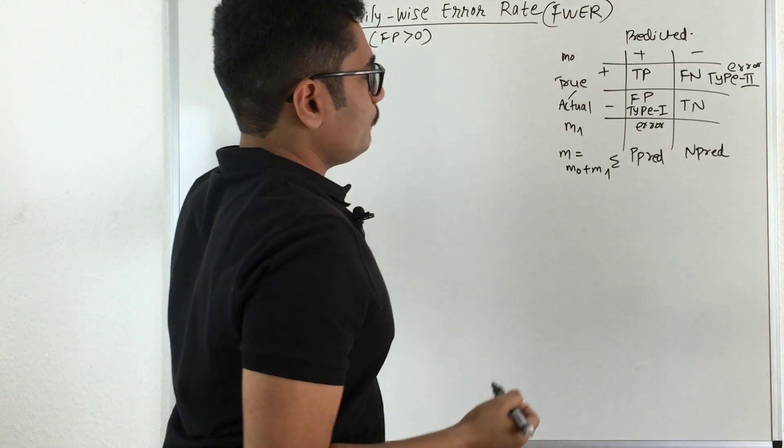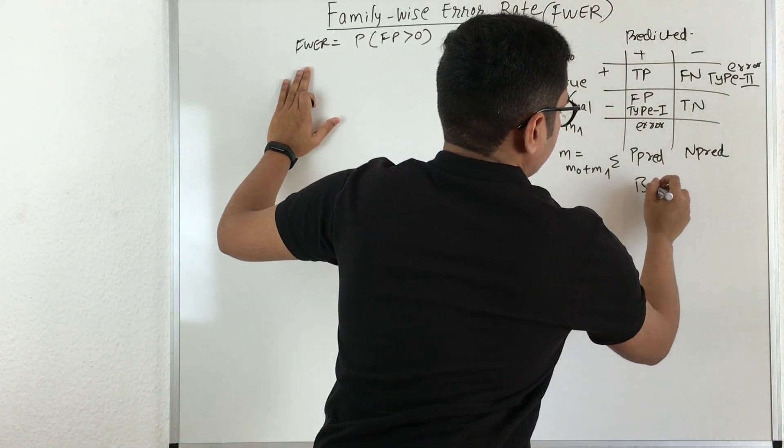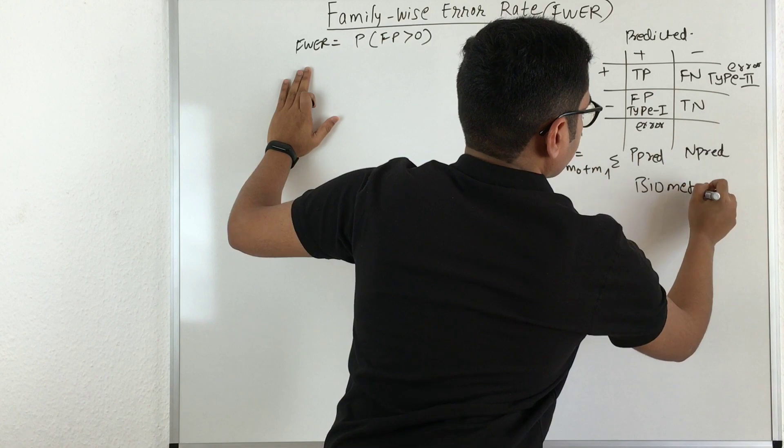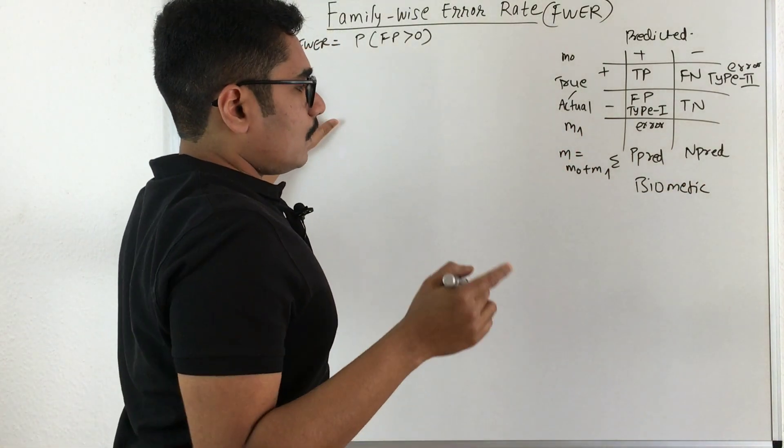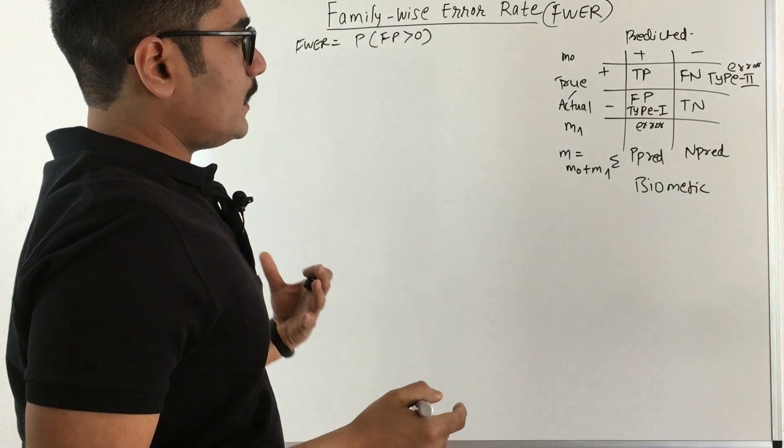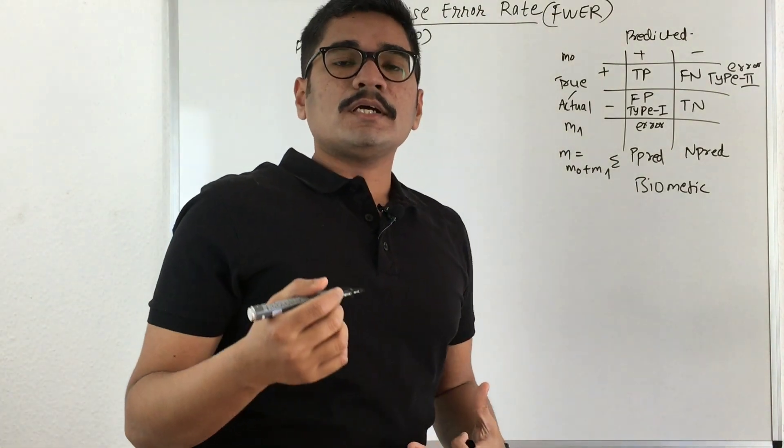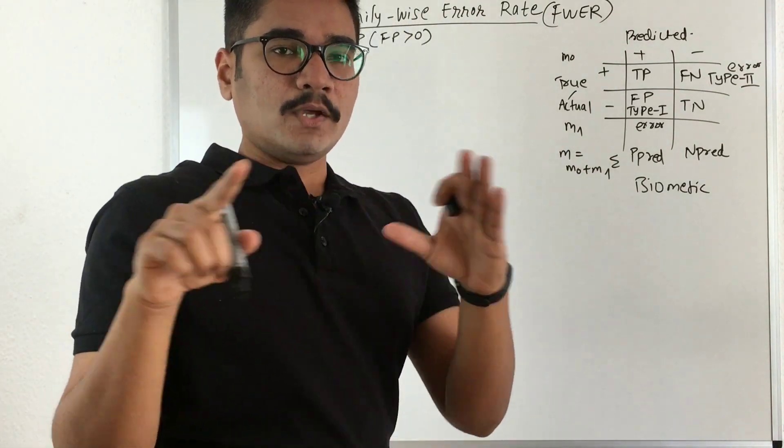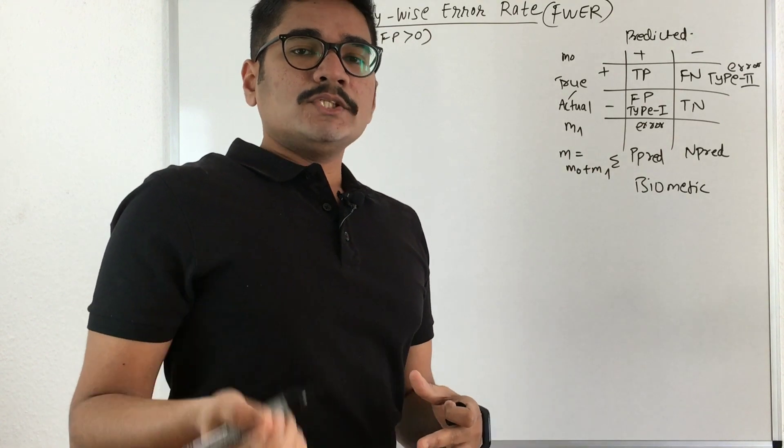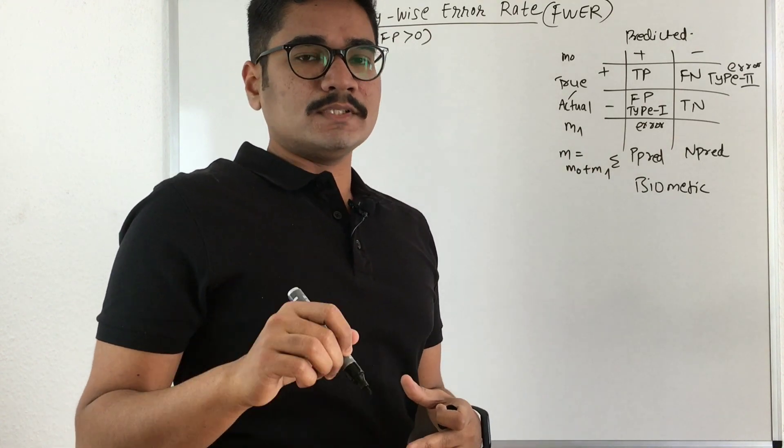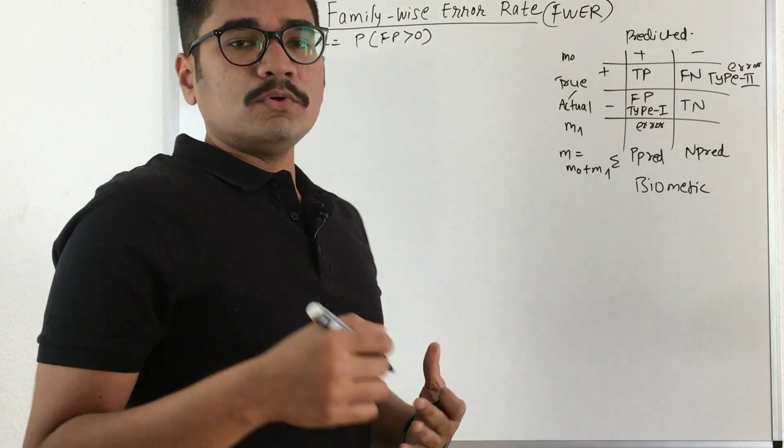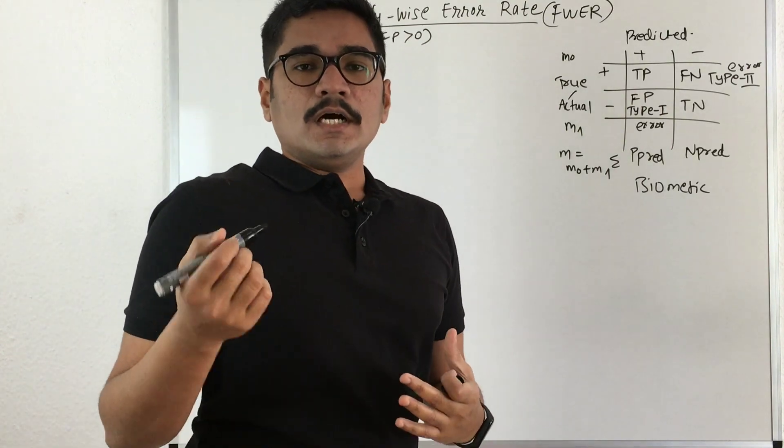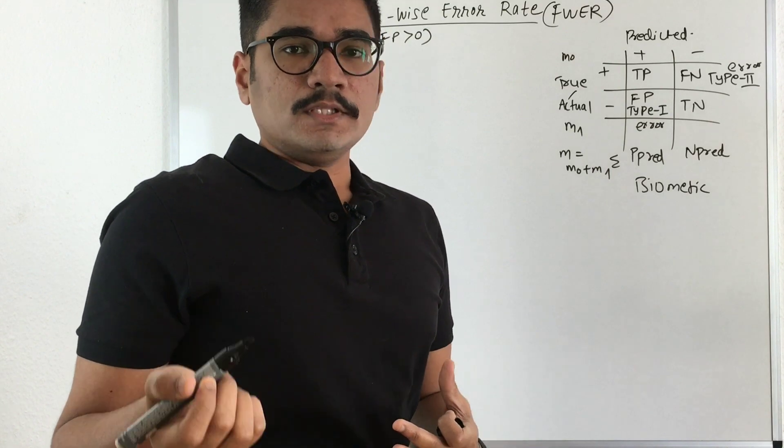Now let us take one example. Say we have a biometric system, and this biometric system is for hand or fingerprint recognition. And say at the university for student attendance system, we have kept a biometric system. Now for each of the students who have enrolled into the system, it should give the acceptance, and for those who have not done the enrollment, it should give the rejection.